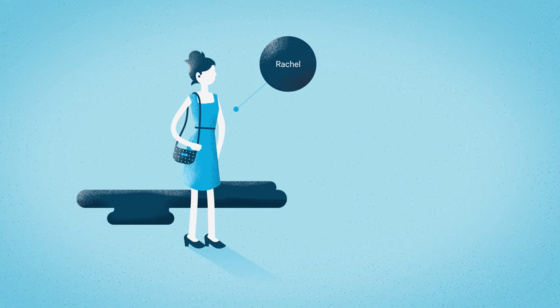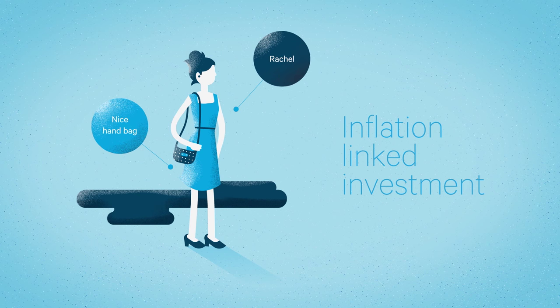And then there's Rachel Chan. Rachel wants to keep her income linked to inflation in order to protect her purchasing power.